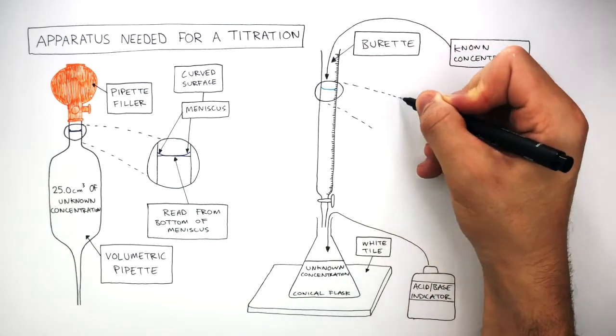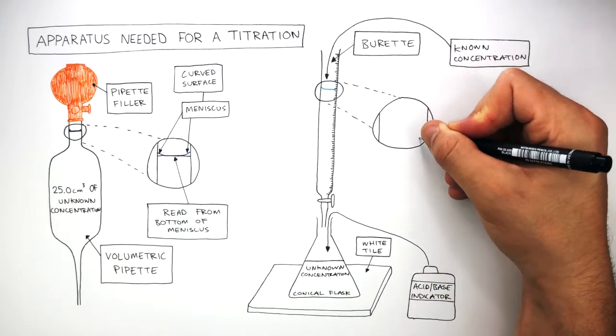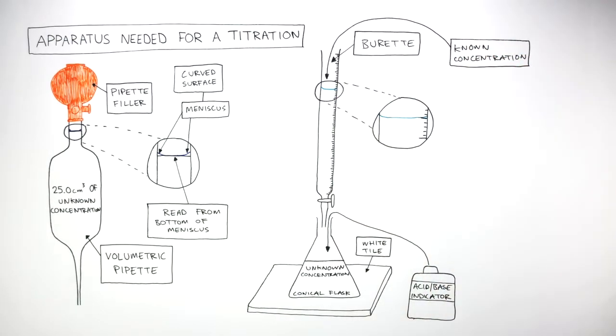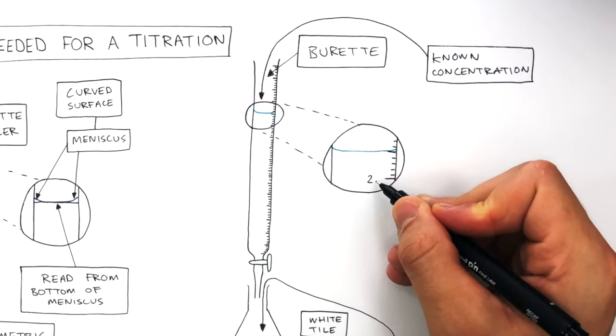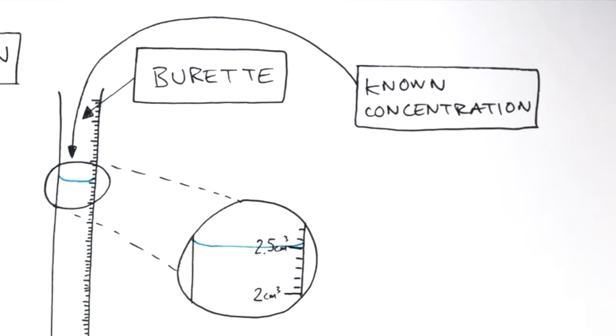When we zoom in on the meniscus we can see how the meniscus goes in between the gradation. Because of this, burettes are graduated every 0.1 cubic centimetres, so measurements can be taken every 0.05 cubic centimetres.